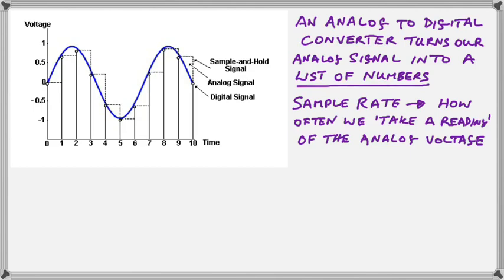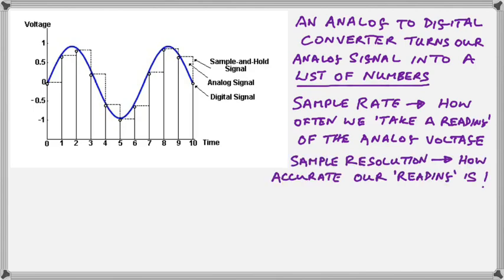So clearly the sample rate, how often we take a reading of this analog voltage, is going to have a bearing on how accurately it represents the analog signal. The more samples that we take, or the higher the sample rate, the more numbers we are going to have to store. So we need more memory, but the more accurately we will be able to record the information that takes place between the sample points shown in this simple diagram.